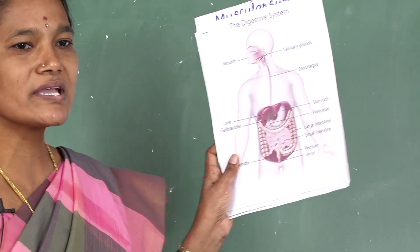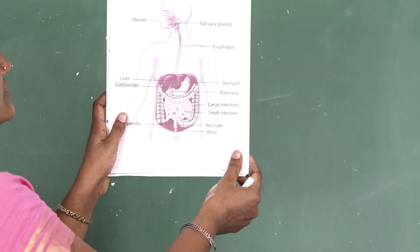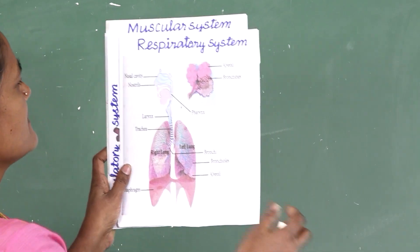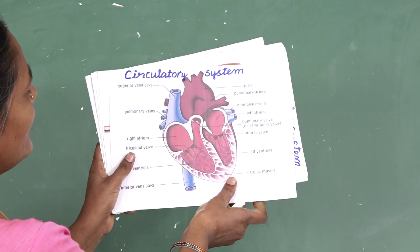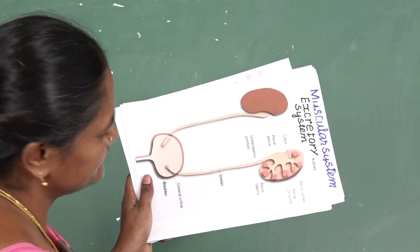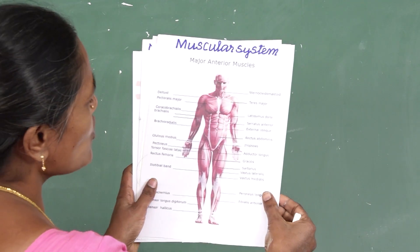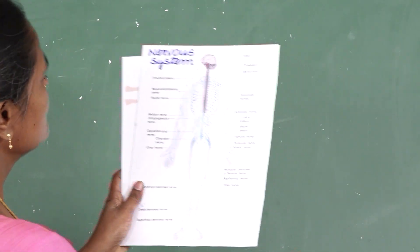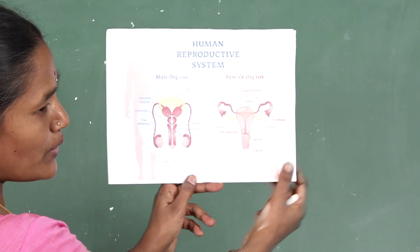There are main organ systems in our body. They are: the digestive system, respiratory system, circulatory system, excretory system, muscular system, skeletal system, nervous system, and reproductive system.